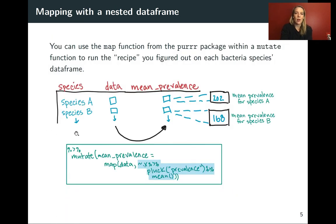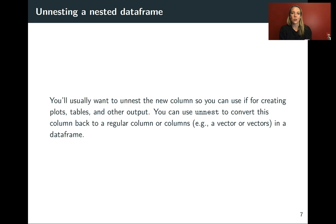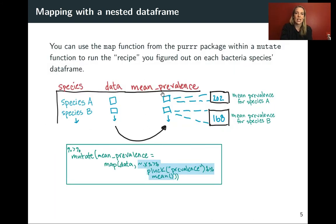So now at this point, we've added this new column and tucked inside of each element is the value for mean prevalence for the species. But we can't really use that value while it's still nested very easily. So a lot of times we want to unnest to get back to a tidy data frame where we can use our usual tools. You can use unnest to untuck one of those columns. In the case where we have just a single value in the mean column, each one of these is a vector of length one — this will be very easy to unnest and we'll still have one row per species. This will just extract it so it's not in the list anymore, just a normal column.